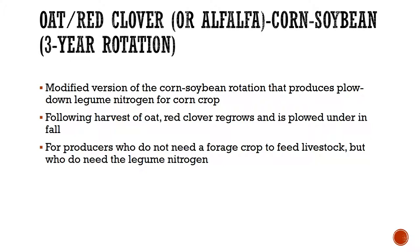An oat, red clover or alfalfa, then corn-soybean three-year rotation is sometimes modified because of the corn-soybean rotation. You're able to plow down those legumes — the oats, red clover, or alfalfa — as a green manure crop to input nitrogen for that corn crop. A lot of organic growers will do this: they'll wait until that oat, red clover, or alfalfa is right before maturity, plow it under, and then following that, put in the corn or soybean rotation. They'll also use that corn or soybean for their livestock as well.